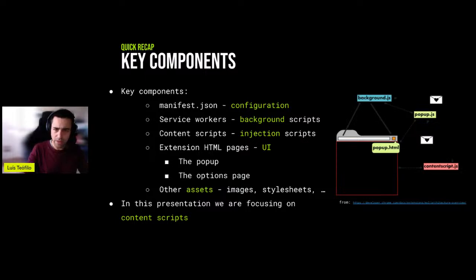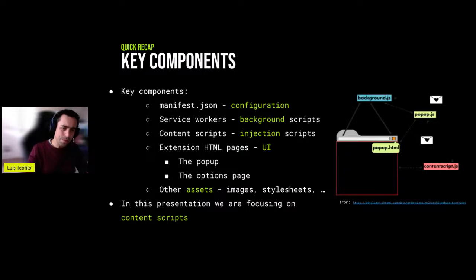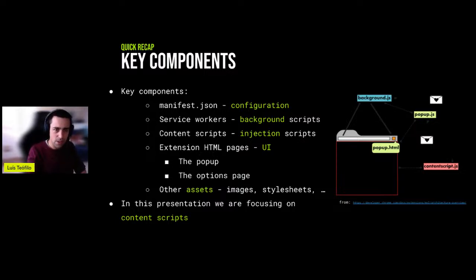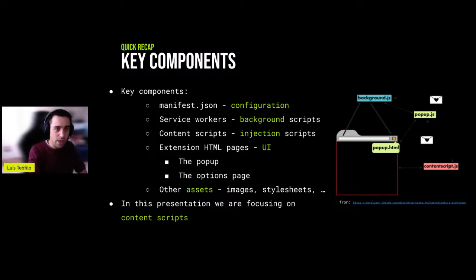These are the key components. We have the manifest file, which has the configuration. In terms of JavaScript files, we have two types: background scripts, which run with the browser and are always running while the extension is enabled; and content scripts, which are scripts injected directly into the web applications. Background scripts have more access to browser functionalities, while content scripts have more access to the functionality inside the web application. They interact with each other - one typical use for background scripts is to cache data to be used by injection scripts.